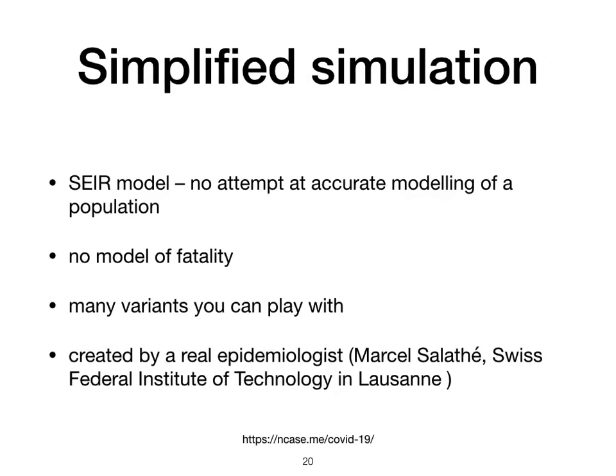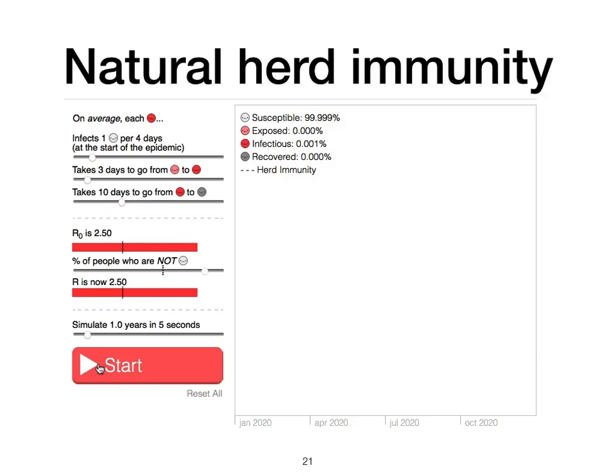I'm going to look at a simplified simulation using an SEIR model. It doesn't attempt to model a particular population accurately, doesn't model deaths, but has many variants you can play with and was created by a real epidemiologist. In this example we try to model natural herd immunity. The sliders at the top left allow you to change how fast the disease progresses, and the way they are set gives you an R0 of 2.5. We're going to simulate a year in five seconds. The main box shows only 0.01% of the population is infectious, no one is exposed or recovered, and the rest are all susceptible.